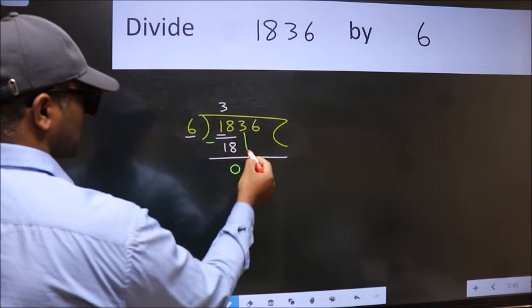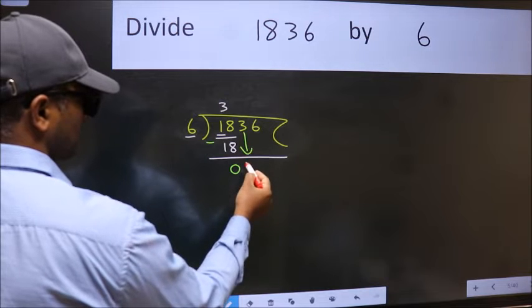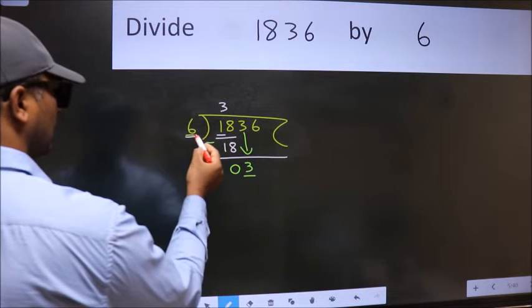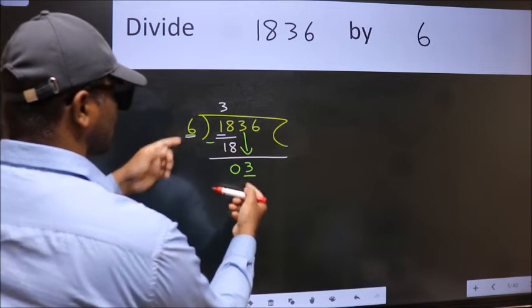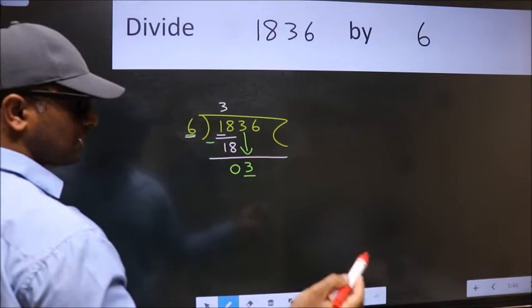After this, bring down the beside number, so 3 down. Now here we have 3 and here 6. 3 is smaller than 6, so we should bring down the second number.